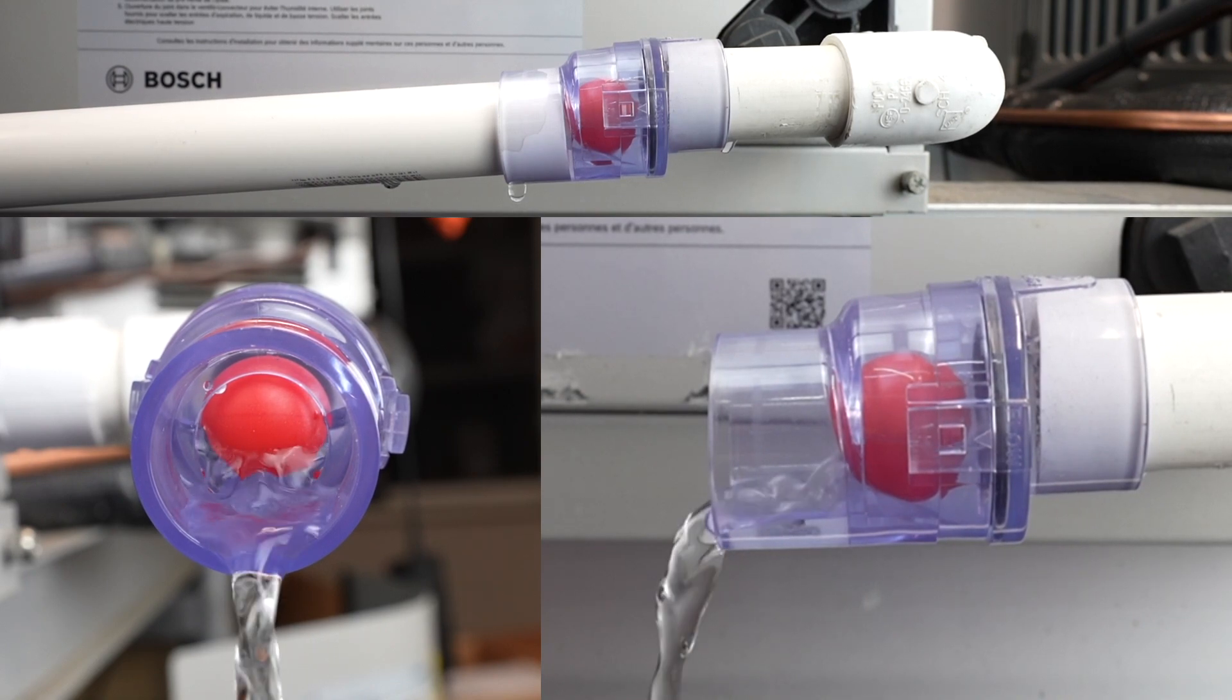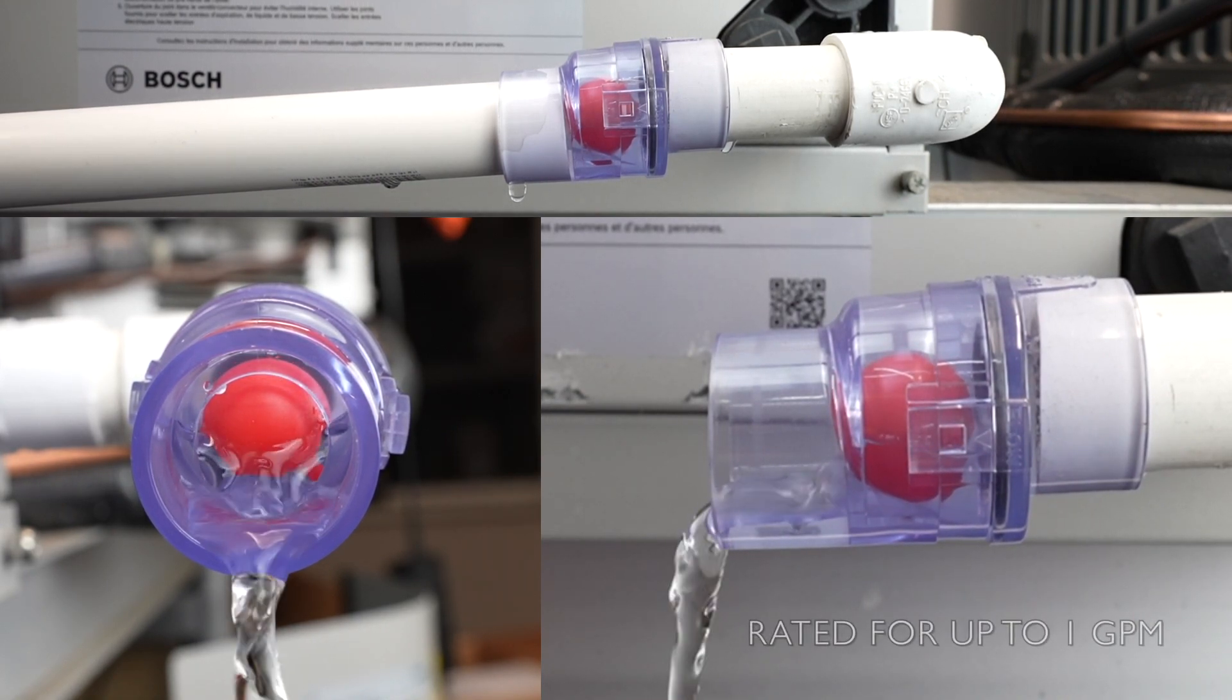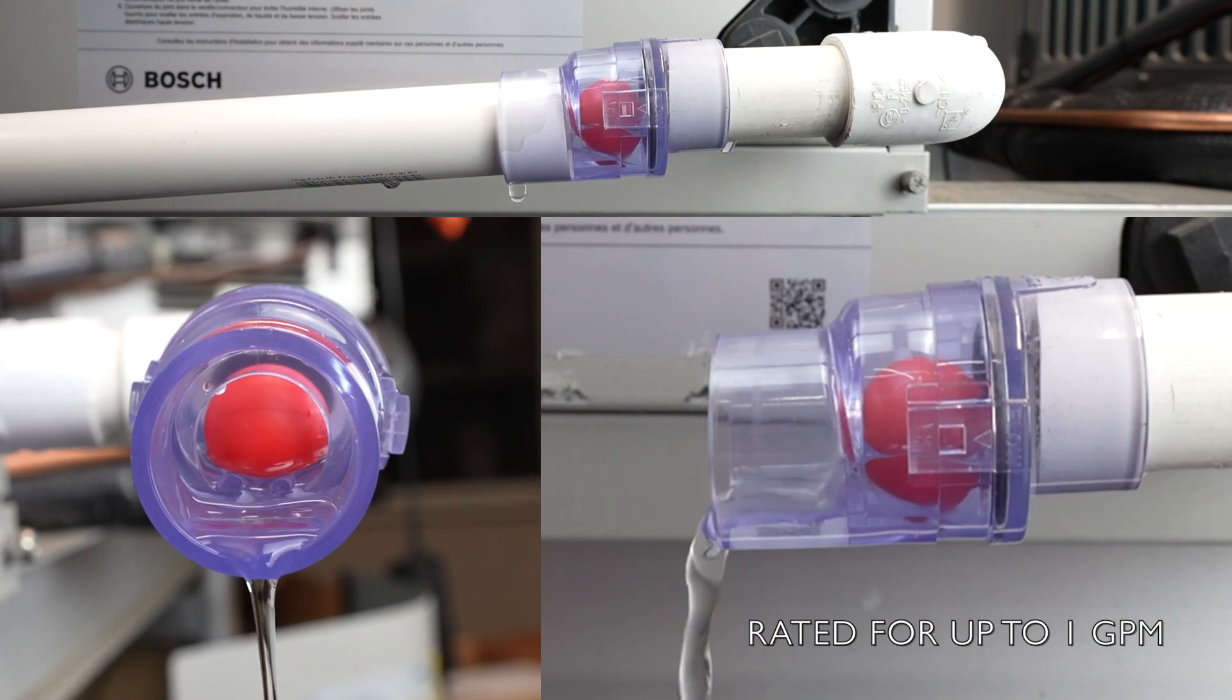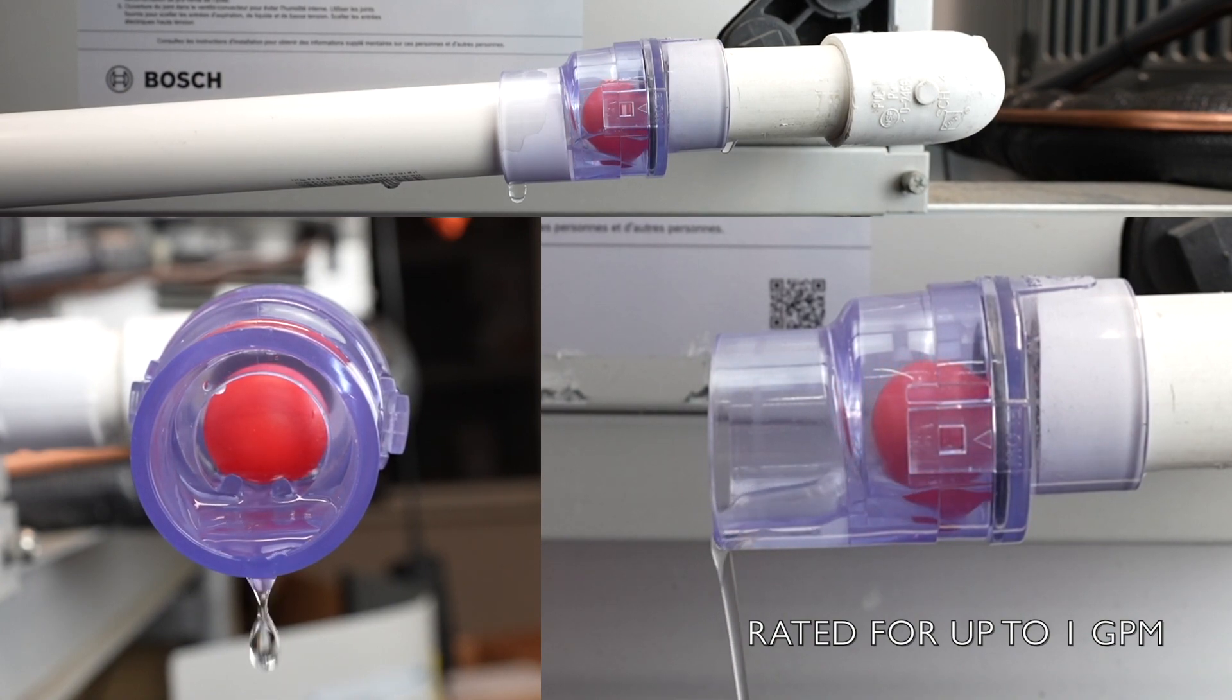When no condensate is present, the negative pressure pulls the ball valve against the hole, seals the condensate line, saving energy and eliminating dirty air from entering the system.